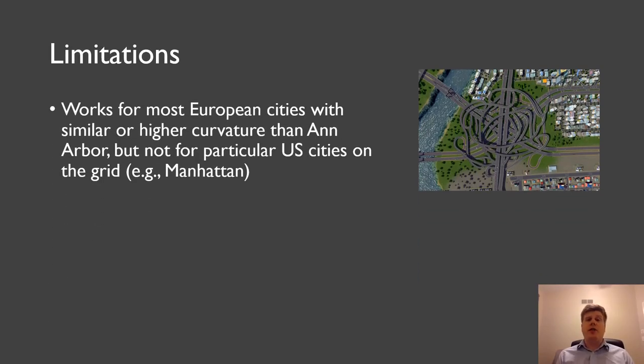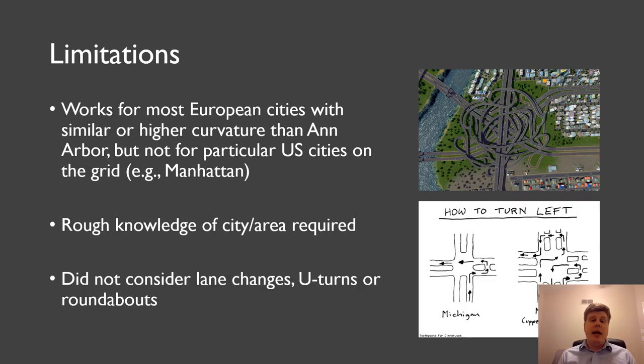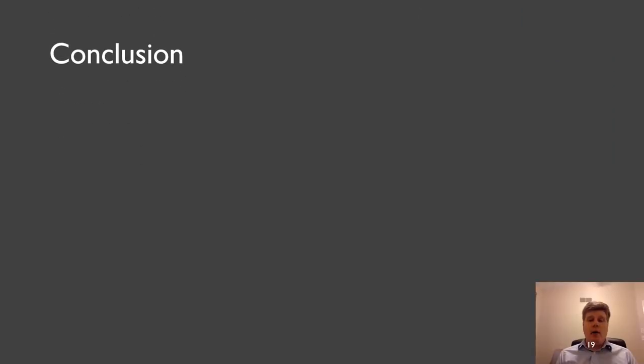Of course, we have limitations. We saw that or we think that for most European cities, it will work because they're usually curvier than American cities that are usually on the grid. Just look at Manhattan. It's impossible to distinguish the roads from each other because they have no curvature whatsoever. We need a rough knowledge of the city in the area, but no starting point assumption. And what we also did not consider are lane changes, U-turns or roundabouts, whereas the former lane changes are, as you can read in the paper, should not be a big problem for RAKUMA.